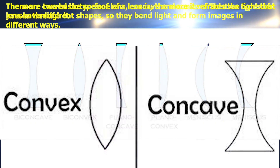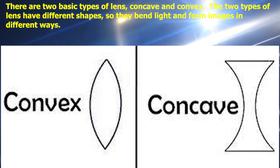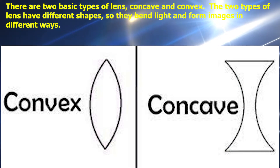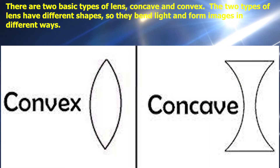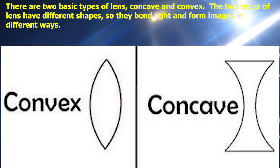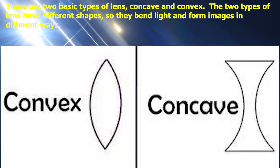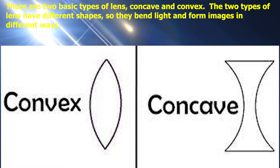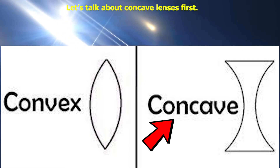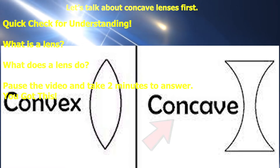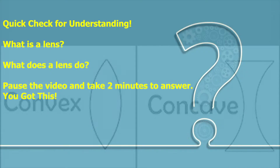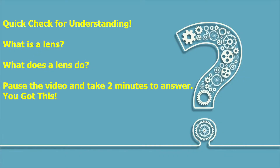There are two basic types of lenses: concave and convex. The two types of lenses have different shapes, so they bend light and form images in different ways. Let's talk about concave lenses first. Quick check for understanding: what is a lens and what does it do? Pause the video and take two minutes to answer. You've got this.